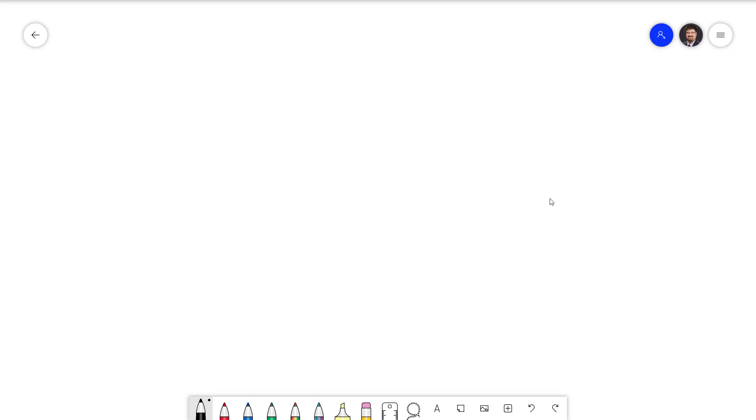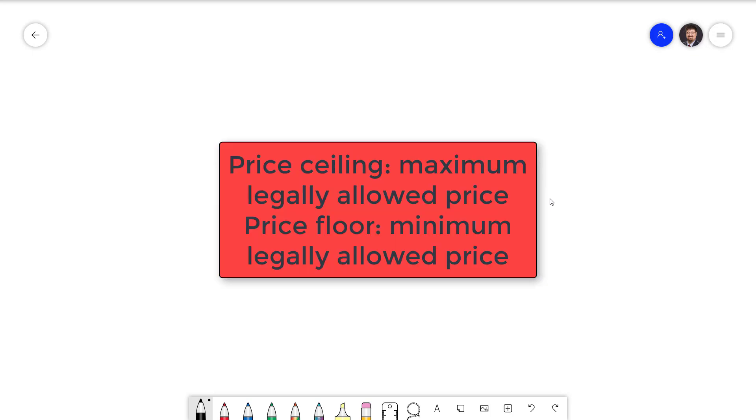In this video we'll be talking about price controls. There are two different types of price controls. Price ceilings set a maximum legal price for a good and price floors set a minimum legal price for a good. Prices are not allowed to go over price ceilings and they are not allowed to go under price floors.